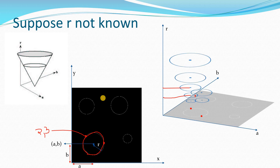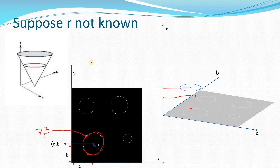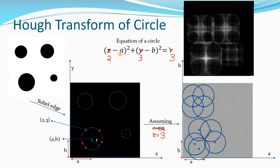So that is the Hough transform for circles. Like this, you can apply Hough transform for any shape — just see how many parameters that shape has. The circle had 3 parameters: a, b, and r. For other shapes, you can have different numbers of parameters, make a parametric space, transform the detected edges to that parametric space, find the maximum intersections, and that gives you the parameter values to reconstruct the desired shape. I hope you understood this video — if you have any doubts, put them in the comments. Thank you so much for watching.